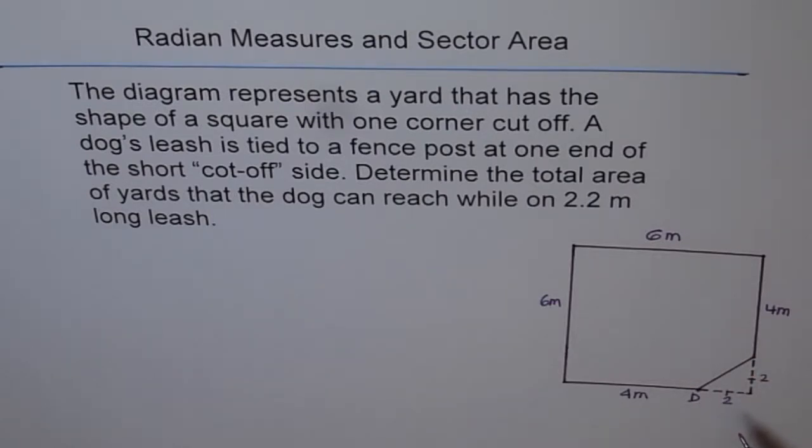A dog's leash is tied to a fence post at one end of the short cut off side. Determine the total area of yard that the dog can reach while on a 2.2 meter long leash.